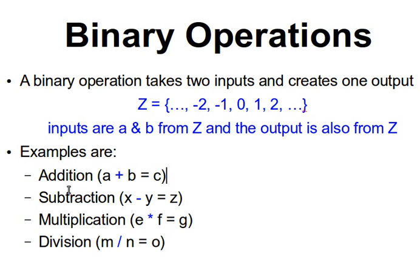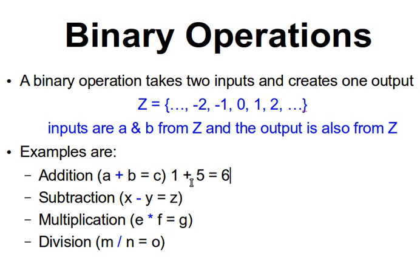Some examples of binary operations are addition, subtraction, multiplication, and division. Any two variables — A and B, or X and Y, or E and F, or M and N — all three elements (the two inputs and the output) will belong to Z. For example, 1 plus 5 equals 6, or minus 1 plus minus 5 equals minus 6.